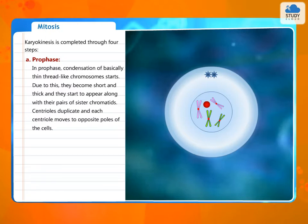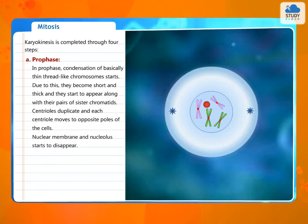Centrioles duplicate and each centriole moves to opposite poles of the cell. Nuclear membrane and nucleolus start to disappear.